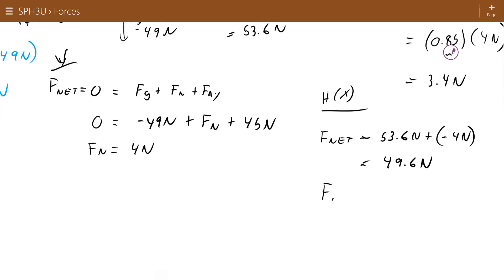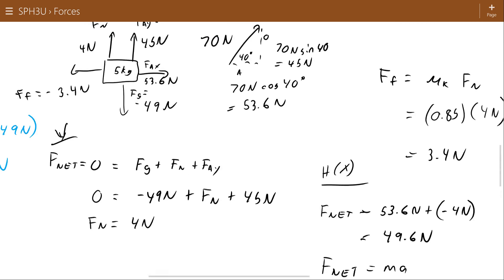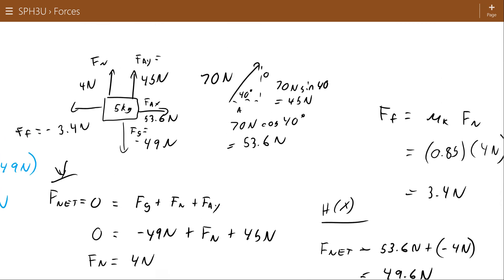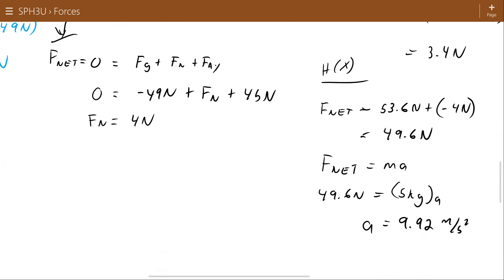And that Fnet equals ma. So a works out to 9.92 meters per second squared, which is a fairly large acceleration, which results from the fact that we pulled pretty hard on this crate. We almost lifted it right off the ground. And as a result, there was very little force of friction or very little resistance to that big pull.